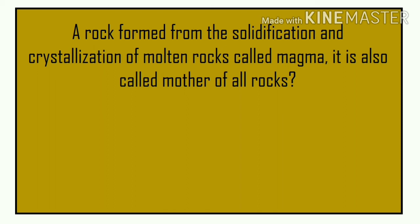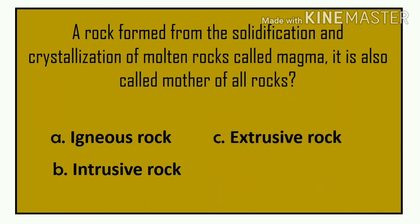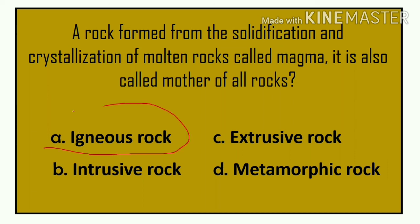Going back to the question: a rock formed from the solidification and crystallization of molten rocks called magma, also called the mother of all rocks — meaning the primary and origin of all rocks. The choices are: A) igneous rock, B) intrusive rock, C) extrusive rock, D) metamorphic rock. The correct answer is A — igneous rock, because it is the primary rock and the origin of all rocks.